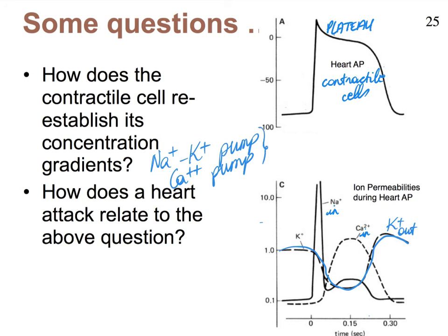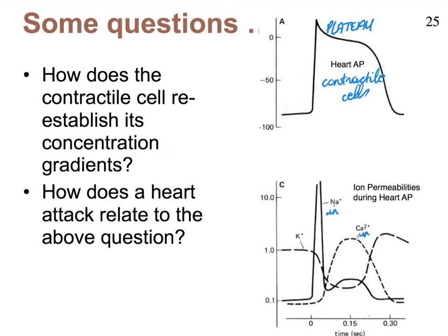How do these pumps relate to heart attacks? If a person has blockage in the coronary arteries, blood cannot provide enough oxygen to the contractile cells. Without oxygen, they cannot produce enough ATP; without ATP, the pumps can't function; without pumps, the heart cannot restore its concentration gradients; and without concentration gradients, ions cannot flow and the heart stops beating. This wraps up the contractile cells — next we'll focus on the auto-rhythmic pacemaker cells and how they generate their action potential.